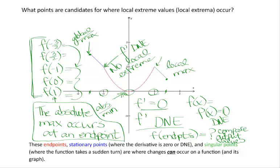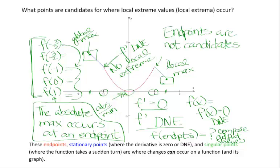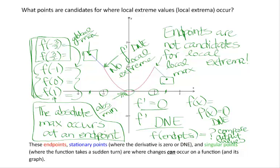Now, one little thing to make sure we know: at the endpoints, those are not candidates for local extrema — only for global or absolute. So if the instructions say find all values of local extrema, you're not going to look at the endpoints. If the instructions say find the extreme values, recognize those could happen at the endpoints, and you will need to compare the outputs of your function with all of the information you garnered from your derivative function.